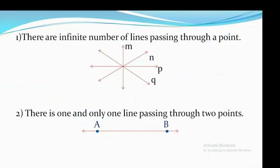The first postulate: if there are infinite number of lines passing through a point — from a given single point, you can draw infinitely many lines. See in the figure, lines m, n, t, q — I've shown some of the lines which are passing from one point. So how many lines can you pass from a point? Infinite number of lines.